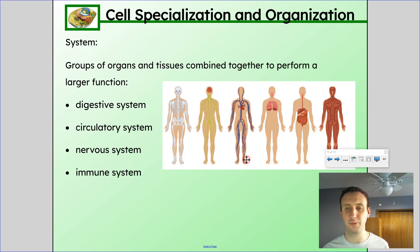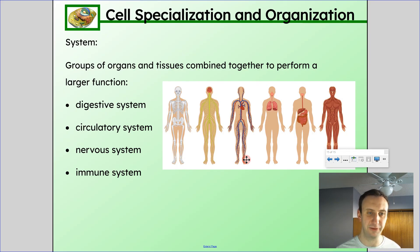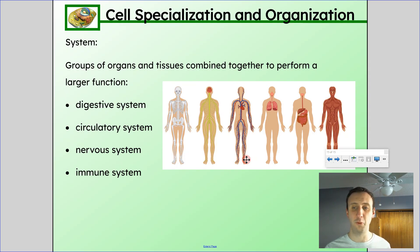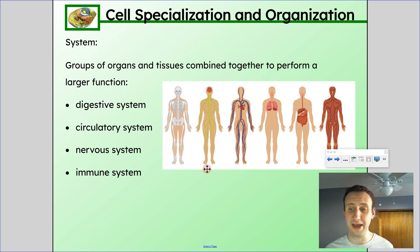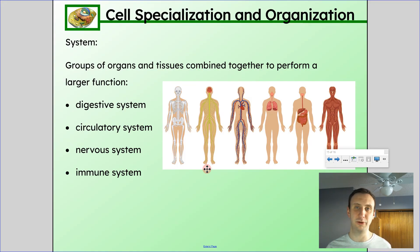If we take a bunch of organs and tissues and put them together to perform an even larger function, then we have a system — groups of organs and tissues combined together to perform a larger function. Examples are the digestive system, the circulatory system, the nervous system, and the immune system. We'll take a look at some of these systems in a future lesson, learning more about the organs they contain, their function, and even some disorders and diseases related to these systems. From today, you should understand that cells are specialized to their function in shape, types of organelles, and number of organelles, and understand the hierarchy from cell to tissue to organ to system to organism.